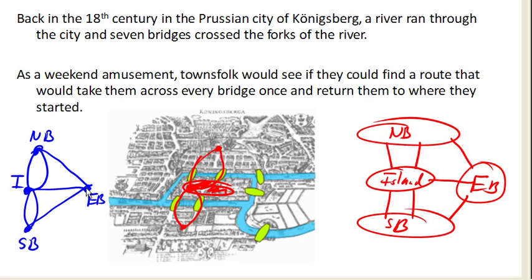By looking at this graph, it makes it a little easier to look at the question of whether it is possible to walk over every bridge — in this case, crossing over every edge once — and return to your starting location, in other words, return to your starting vertex.